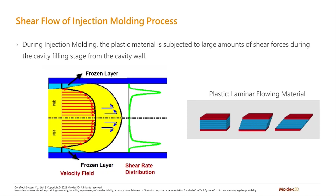So the most important question to start off with is: what is shear, and why do we see it in plastic? Shear is something we're going to see when the plastic is filling into the mold cavity. This is a cross section of the plastic's melt flow front flowing into the mold.